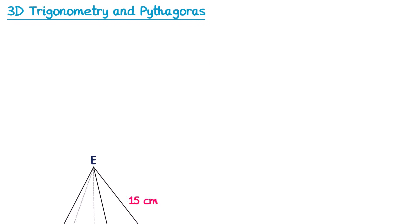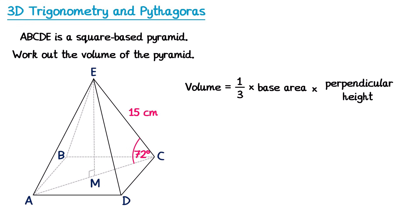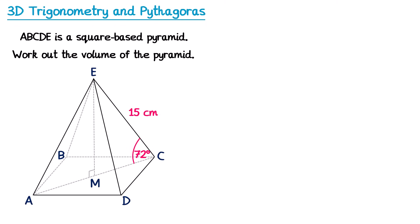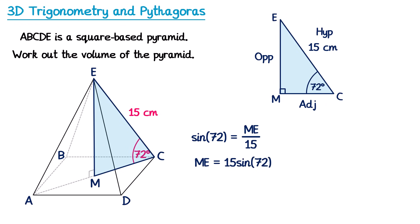Another shape that you sometimes see in exam questions is a square-base pyramid. ABCDE is a square-base pyramid and we might be asked to work out its volume. The formula is: Volume = ⅓ × base area × perpendicular height. We don't yet know the perpendicular height or the base area, so we find those first. Starting with the perpendicular height ME, we use the triangle containing M and E. Labelling ME as opposite and the slant edge of 15 as hypotenuse, we use sine. Sin 72 = ME ÷ 15, so ME = 15 sin 72, which is 14.2 and so on centimetres.